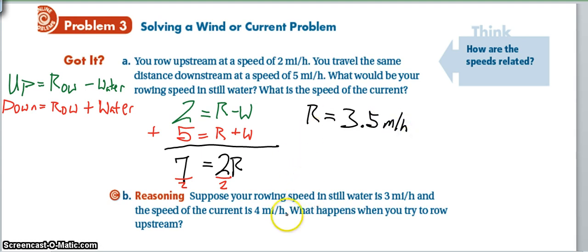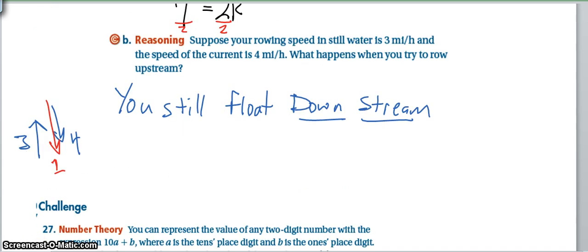So this situation in B is somewhat comedic when you think about it. If you're rowing in still waters only 3 miles per hour, and you're trying to row upstream against a stream whose current is 4 miles per hour, you're going up at 3, the current's pushing back at 4, so the net that is going to happen is you floating downstream at 1 mile an hour, paddling your heart out trying to go upstream. So that would be probably pretty funny to watch.